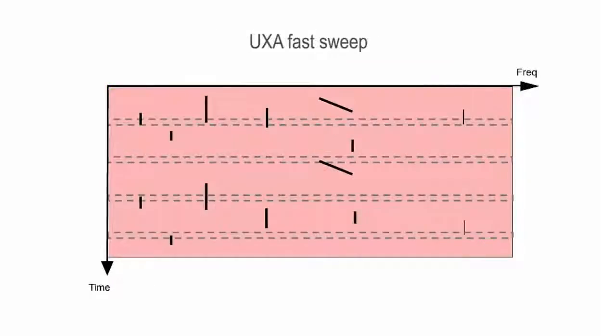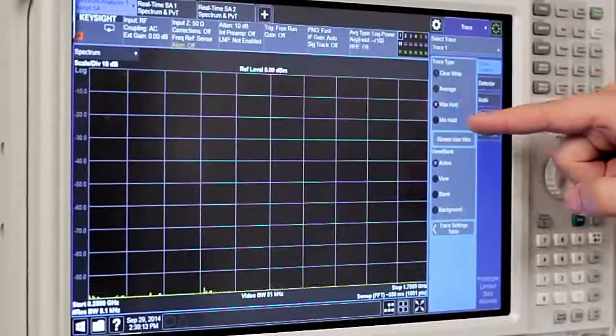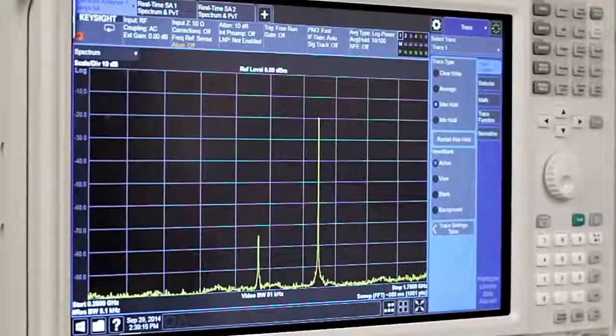In the UXA, we have fast sweep capability as a standard feature. In the analog sweep technique, we can see what the signal content is as the analyzer sweeps through the spectrum. Turning on max hold helps to understand the envelope of the spectrum.